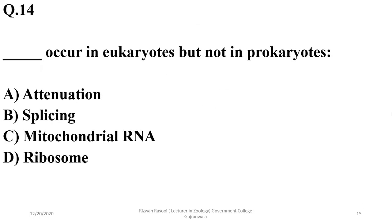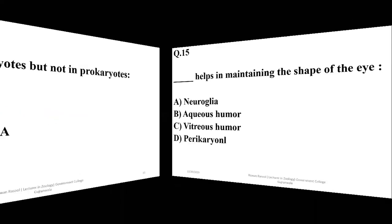Question 14: The process that occurs in eukaryotes but not in prokaryotes is splicing. Mitochondrial RNA resembles prokaryotic RNA, and mitochondrial DNA resembles prokaryotic DNA. But splicing is a process which takes place in eukaryotic cells only, as there are no introns in prokaryotic cells. So B is the right option.